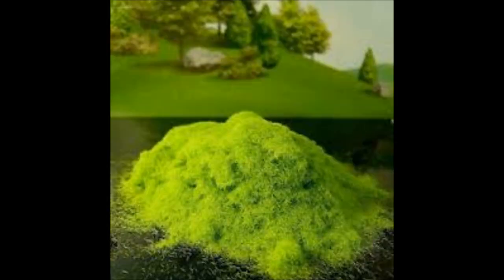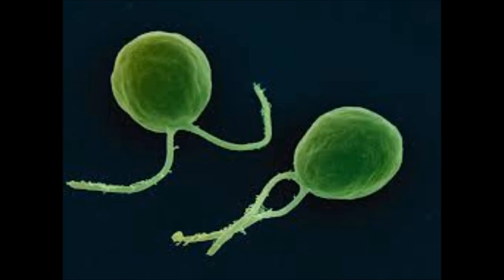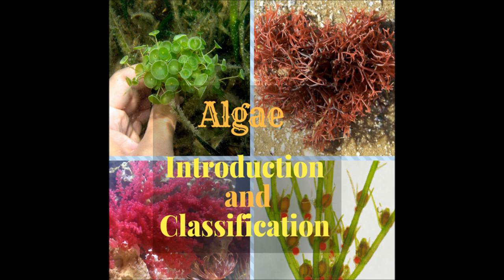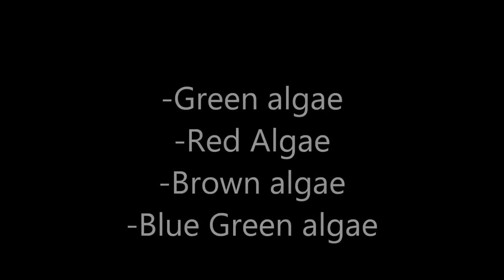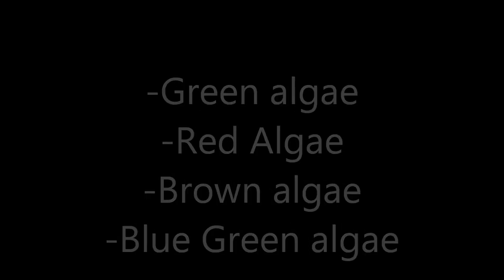Algae belong to the division Thallophyta. Thallophyta comes from two words: 'thallos' meaning undifferentiated and 'phyta' meaning plants. So the plant body is not differentiated into stem, roots and leaves. Mostly, algae are aquatic in nature. Some of them are unicellular and some are multicellular. Generally, algae are of four types: green algae (Chlorophyceae), red algae (Rhodophyceae), brown algae (Phaeophyceae), and blue-green algae (Cyanobacteria).